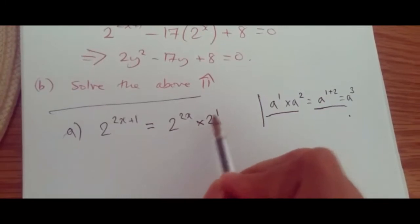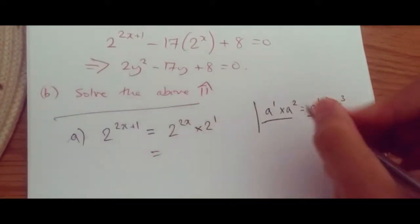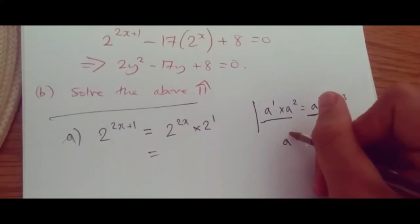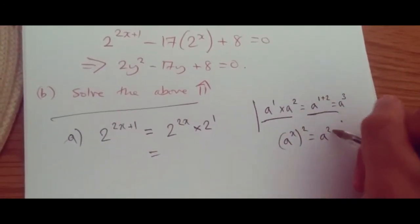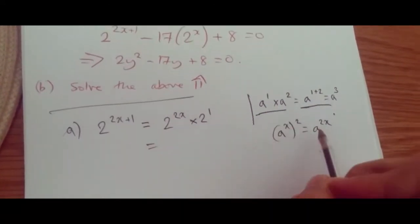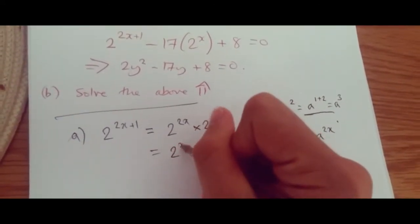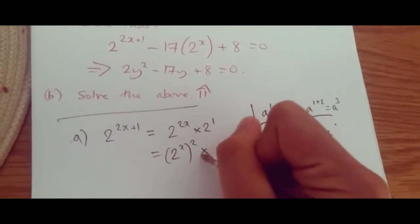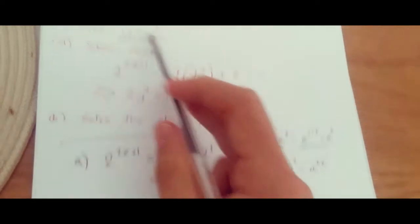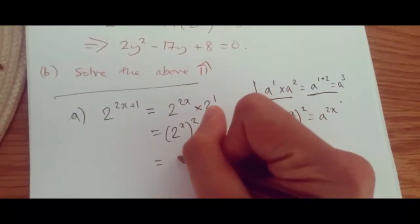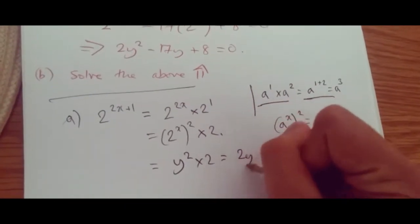So now we've done this — how do we separate this part? If you get a to the power of x squared, this is the same as a to the 2x. So you can see it's pretty much the reverse. So this is the same as 2 to the power of x, squared, times 2. And substituting y back in — because we know that y equals 2^x — we get y squared times 2, or 2y squared.